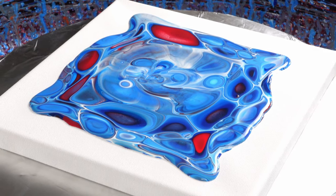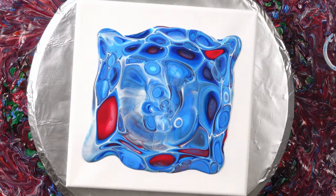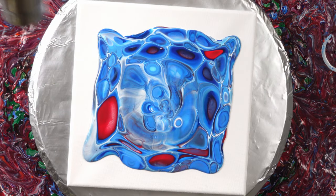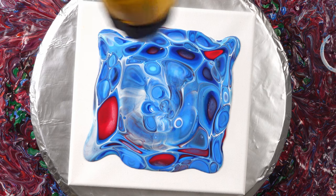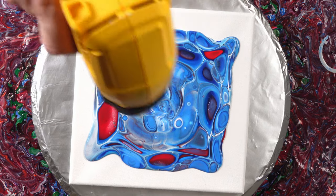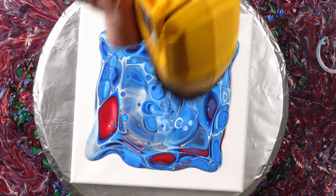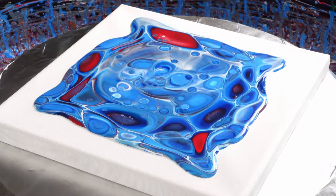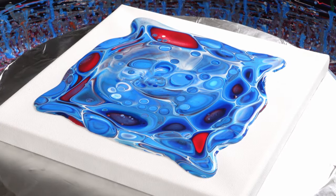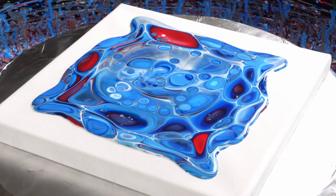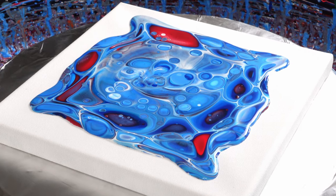So I'm going to take the heat gun, warm it up, bring some of those cells to the surface now before we spin, that way they have a really good chance to grow large.